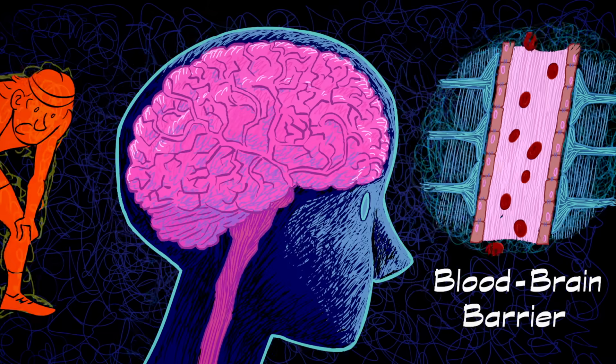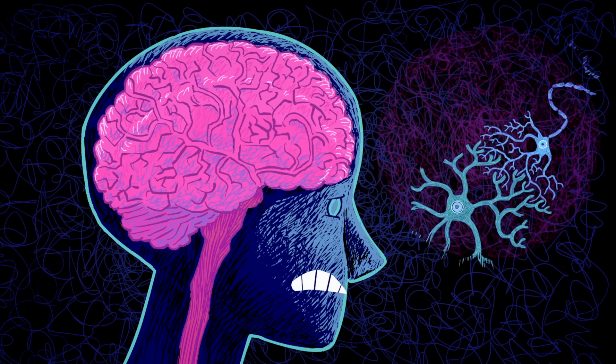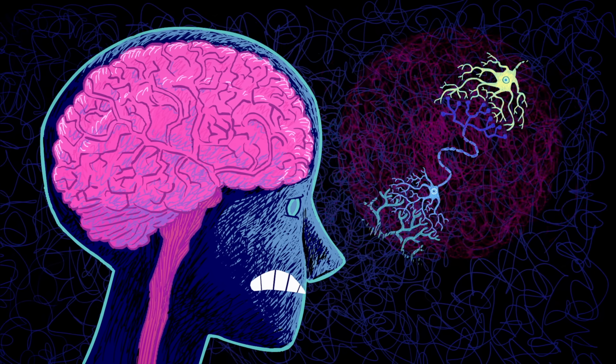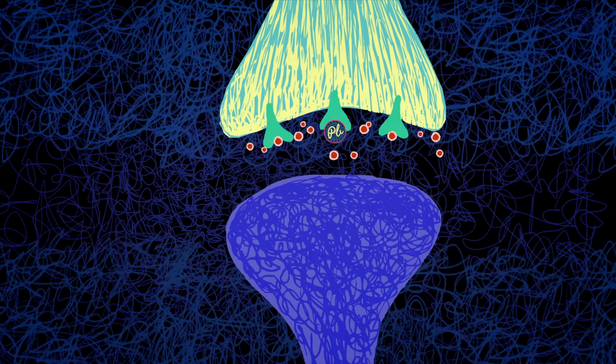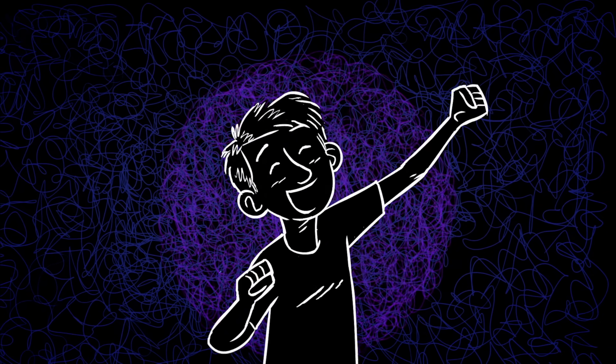Lead can also cross the blood-brain barrier, damaging neurons and interfering with the activity of neurotransmitters like serotonin and dopamine. This can spur cognitive and behavioral changes, including hyperactivity and aggression.